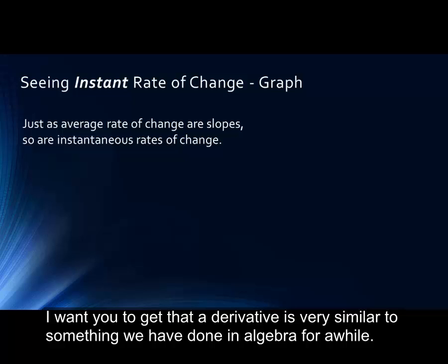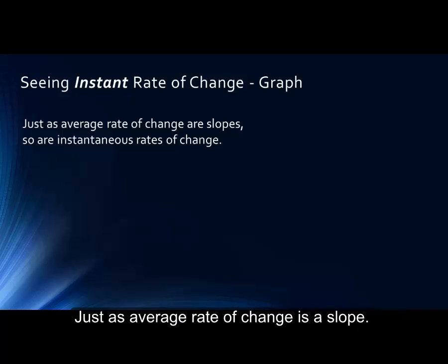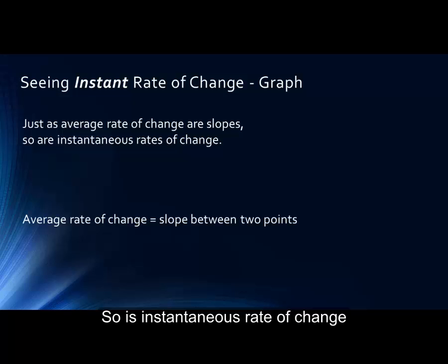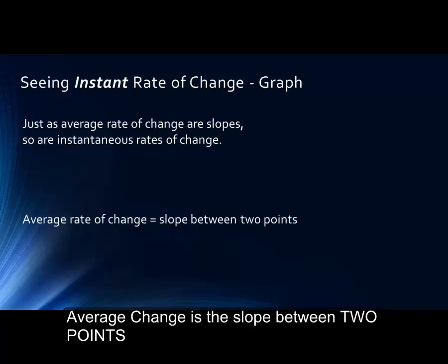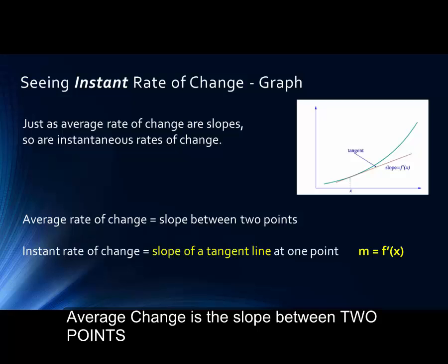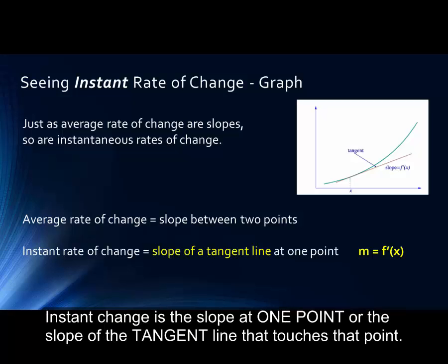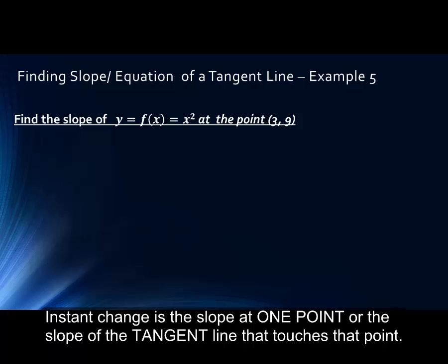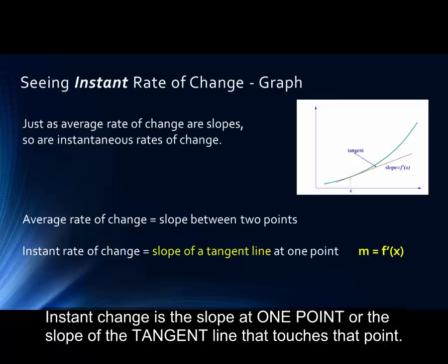I want you to get that a derivative is very similar to something we have done in algebra for a while. Just as average rate of changes are slopes, so is instantaneous rate of change. The average rate of change is the slope between two points, where the instant rate of change is the slope at one point or the slope of the tangent line that touches that point.